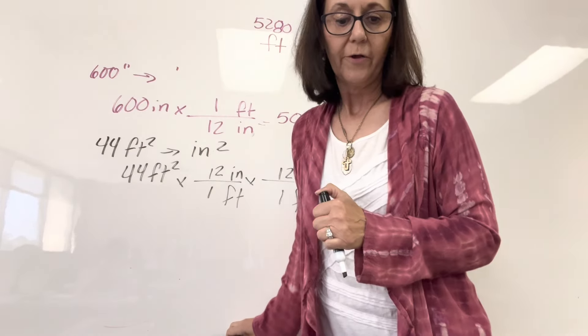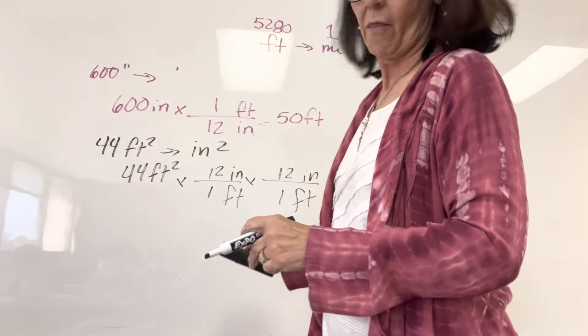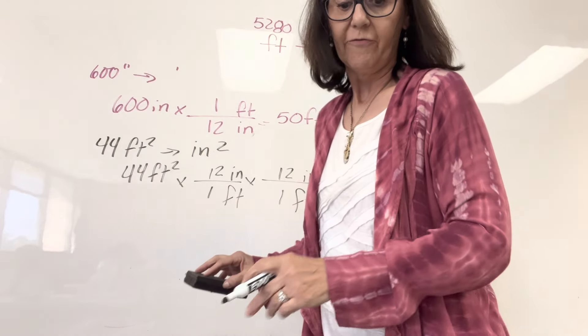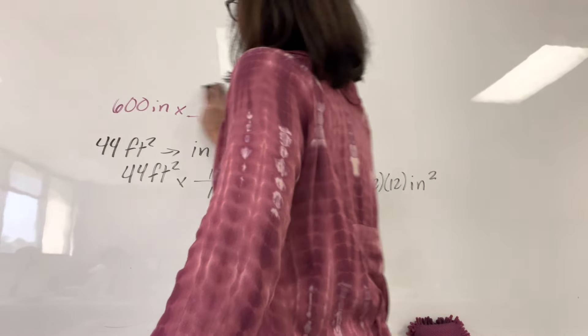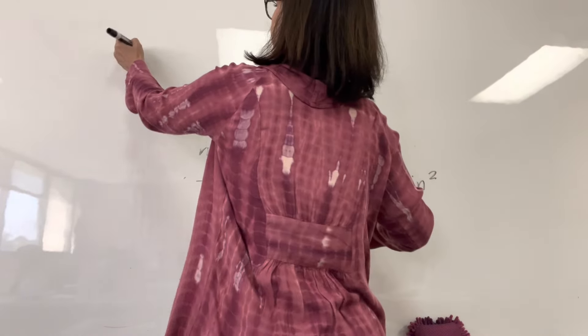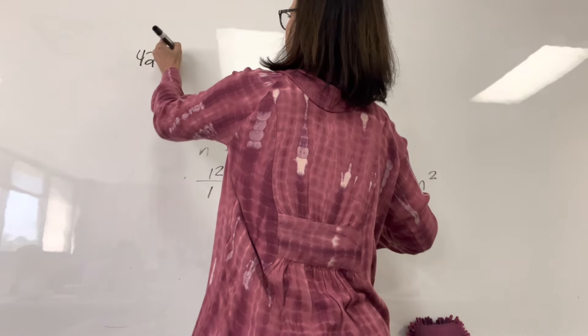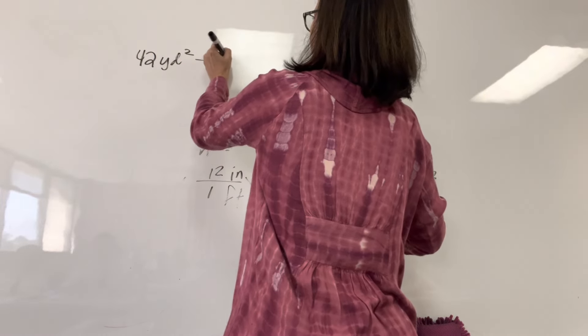All right. Look at example three. We want to convert 42 square yards. Now we're going from 42 square yards to inches squared.